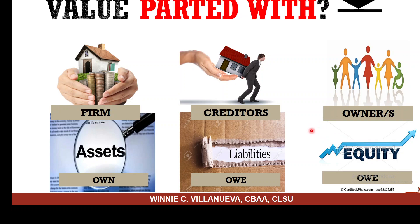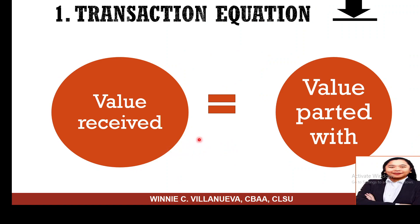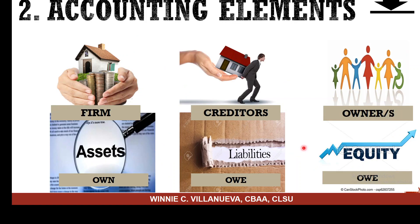Likewise, what you're going to part with is just the same as what you're going to receive — it's just a matter of looking at which one you received or parted with. So we're going to have samples. What's the relationship of the transaction equation with accounting elements? ALE represents the items you're going to receive, and ALE will also be the items you're going to part with. These are your accounting elements. We discuss them together for efficiency — that is the synergy effect.